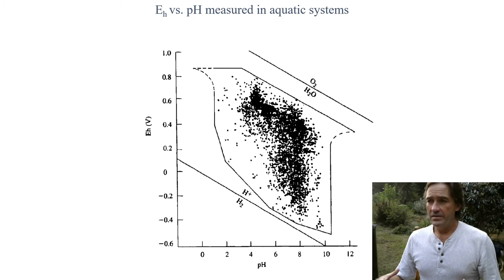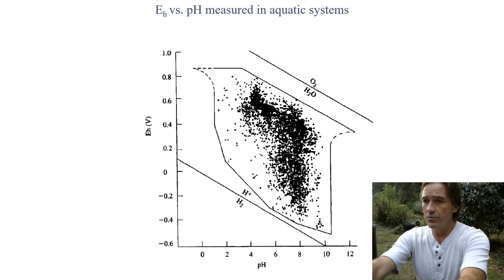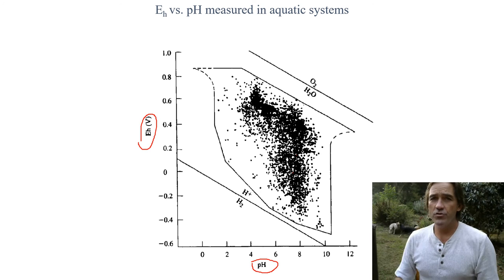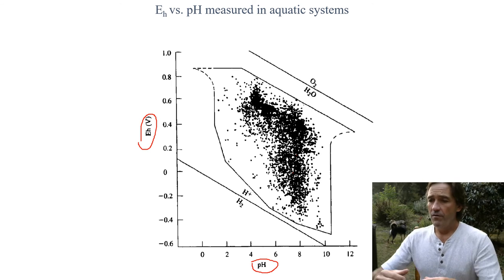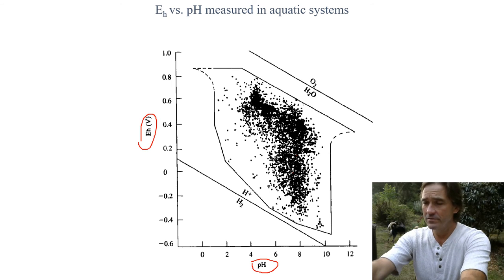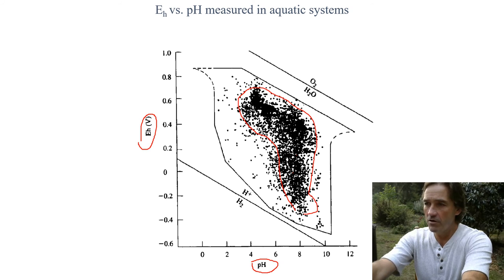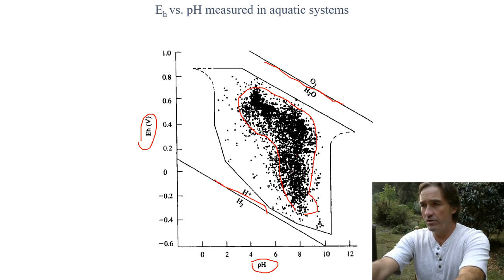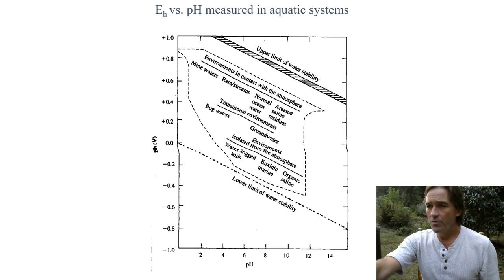What we have here is a plot that's trying to bring this all together. We have EH plotted against pH. All these little black specks are different measurements taken from the scientific literature where scientists took different measurements in different environments. What we find is this cluster of data, and we see that it falls between the couple for hydrogen reduction and oxygen oxidation.